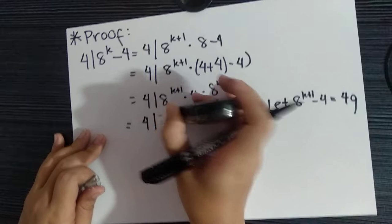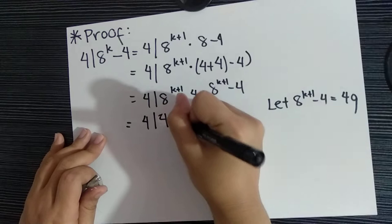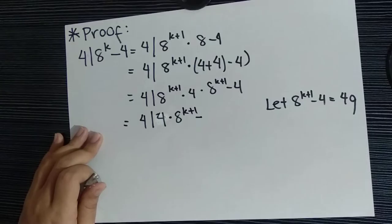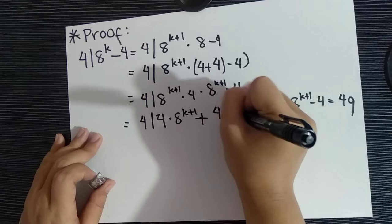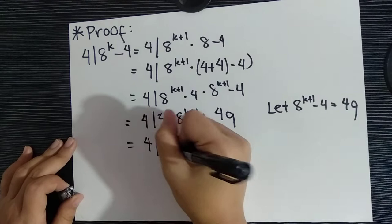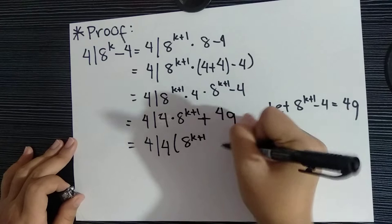We have 4 times 8^(k+1) minus... oh no, it's plus, sorry about that. It's plus for q. We have 4 | 4 times 8^(k+1) plus q.